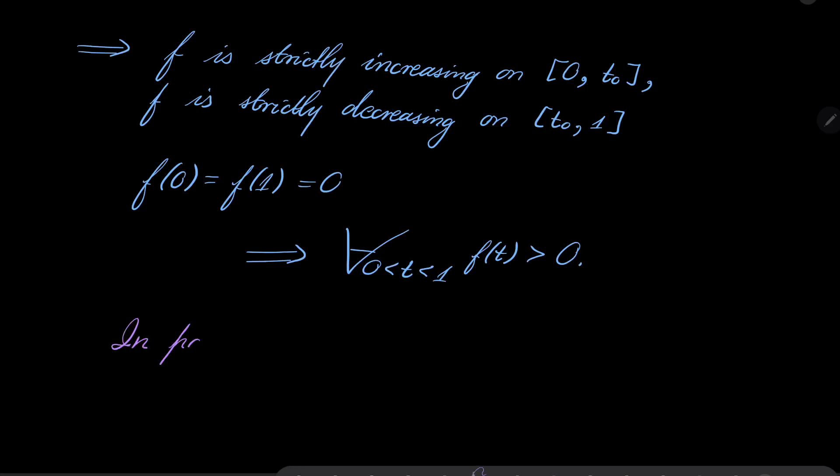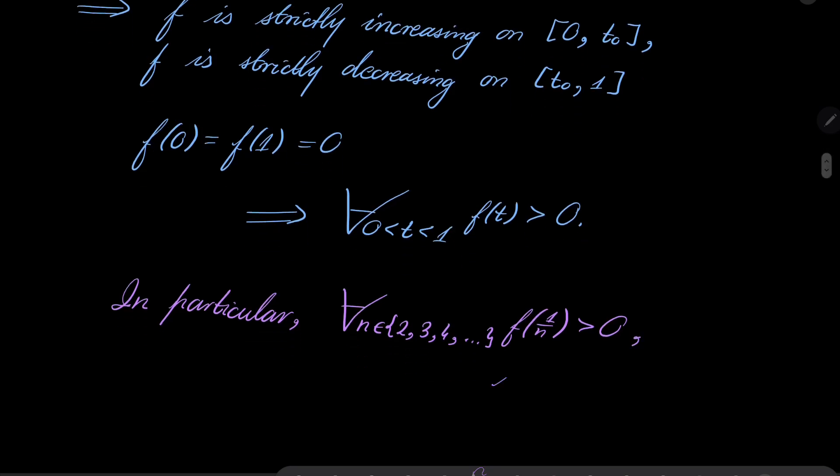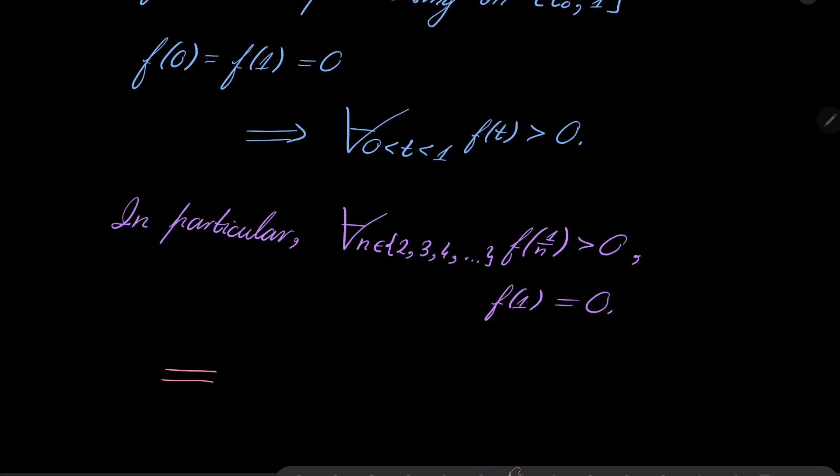In particular, for any integer n from 2 onwards, notice that f(1/n) > 0. And moreover, f(1) = 0, which means this is exactly what we wanted to prove. Because this means that for any positive integer n, sin(π/4n) ≥ √2/2n. And this really closes our proof.